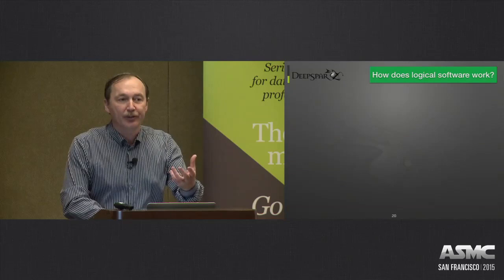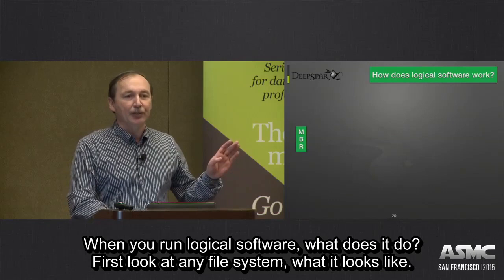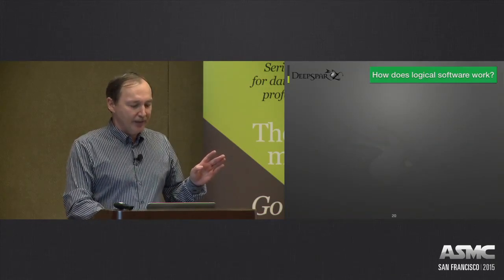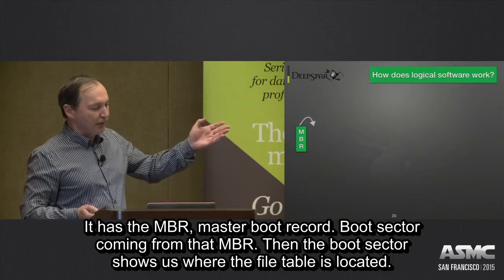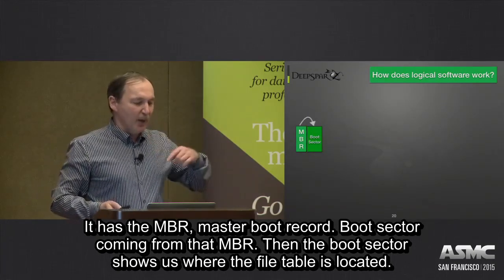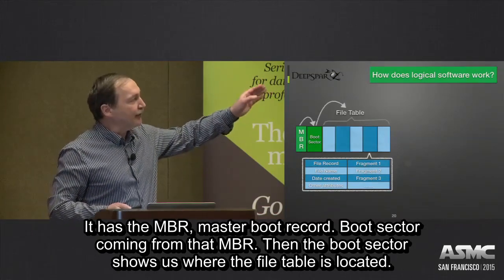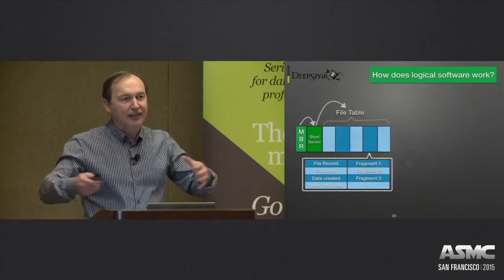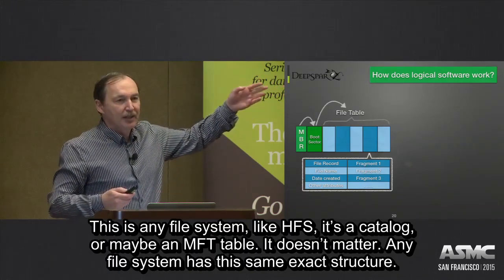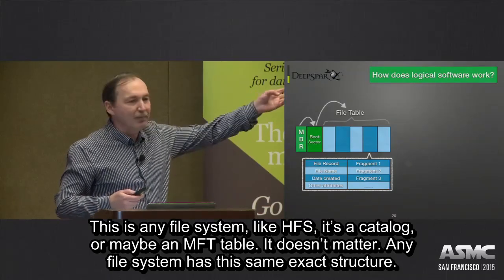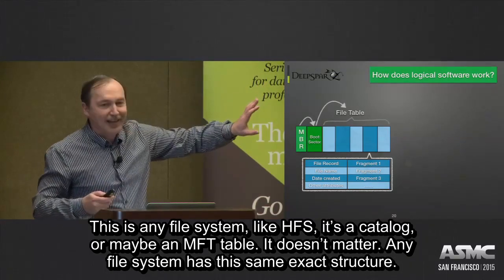So when you run logical software, what does it do? First of all, look at any file system — how it looks. We have MBR, Master Boot Record. Then we have Boot Sector coming from that MBR. Then Boot Sector shows us where the File Table is located. This is any file system — like HFS, where it's called Catalog, or NTFS, where it's called MFT Table. Any file system has exactly the same structure.